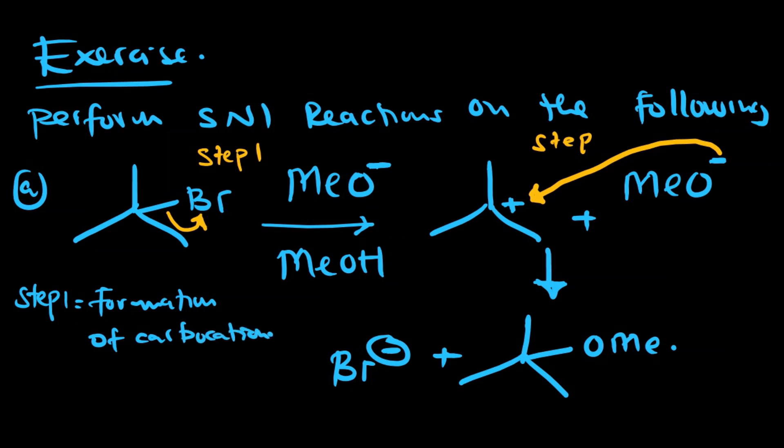The reason why SN1 reactions occur very fast in tertiary substrates is because a tertiary carbon forms a more stable carbocation compared to a secondary carbon, and a secondary carbon forms a more stable carbocation compared to a primary carbon. Let's do example B.